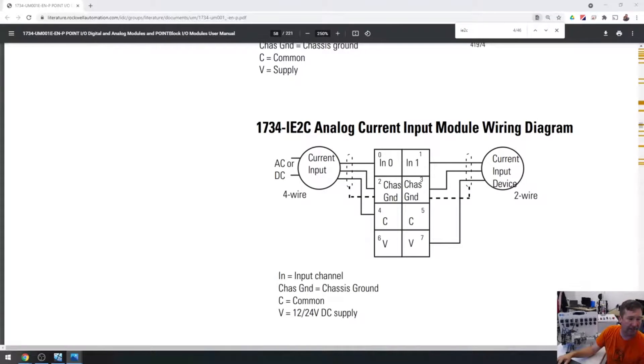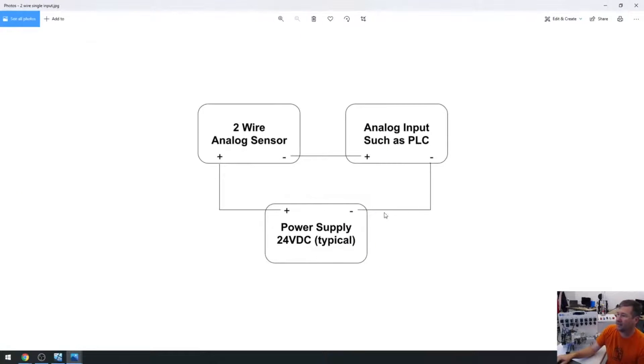Now let's look at a two wire device though, because this is where the confusion really starts to come in. So this is a two wire device. And so same deal, we have an analog plus and a minus or two wires mainly on our sensor.